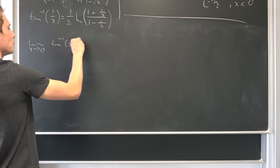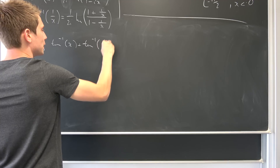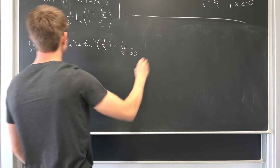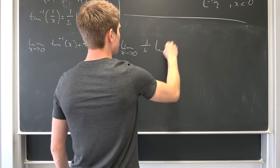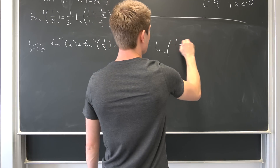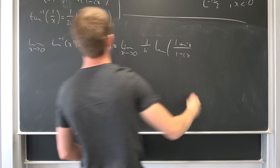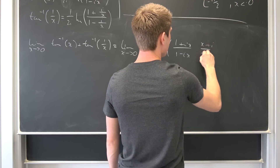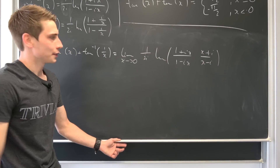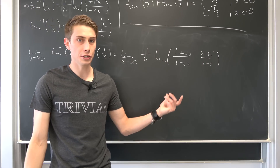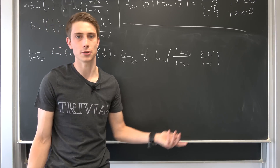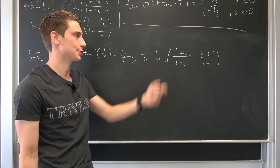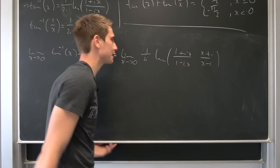We take the limit as x → 0 of arctan(x) + arctan(1/x), which we've derived equals the limit of 1/(2i)·ln((1 + ix)/(1 − ix)) plus ln((x + i)/(x − i)). The good thing is we're on an interval where arctan is continuous, so the natural log is continuous here and we can bring the limit inside and apply it directly.